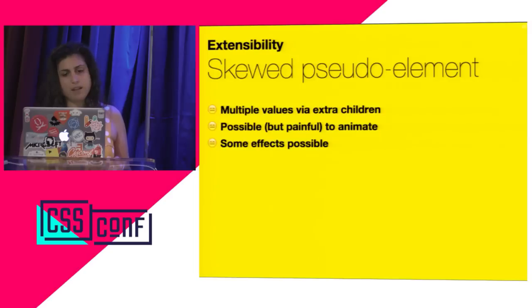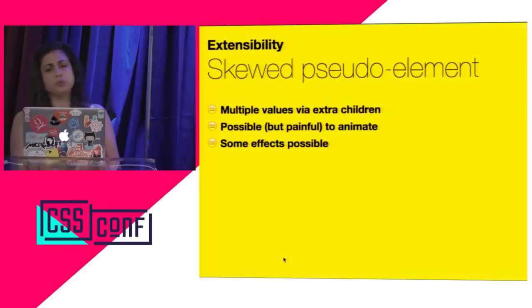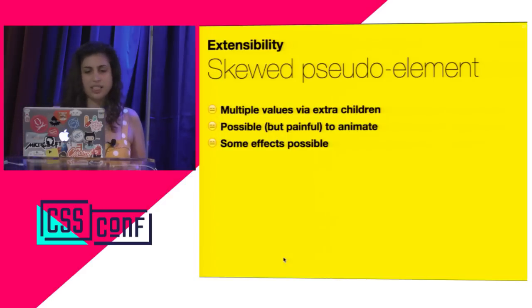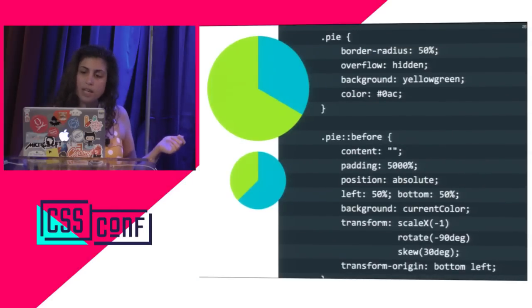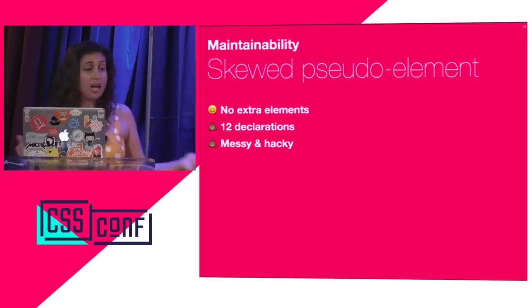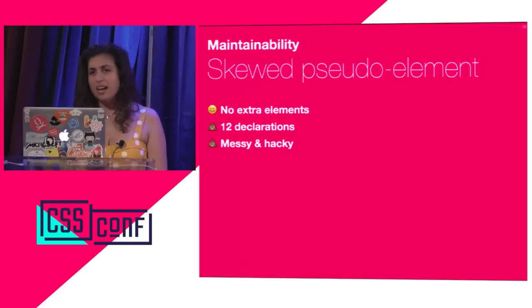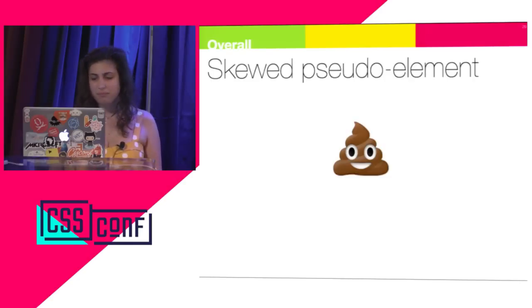So how flexible is this solution? I can change the colors easily and the size easily, but the value — not so easily. And it's not possible to set the value inline since I need to actually modify the pseudo-element. I could have multiple values by using extra children instead of pseudo-elements, and it would be possible to animate by flipping the colors halfway through. But there's quite a bit of code and it's horribly hacky. Overall, it's not a great solution.